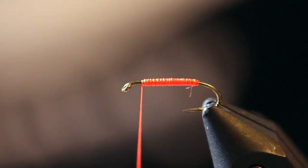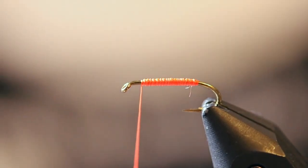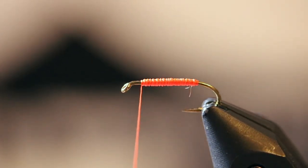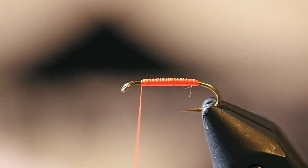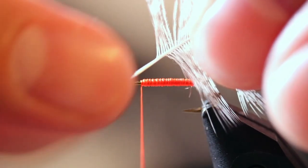From here we're going to be taking a partridge feather. What I've gone ahead and done with this one is removed all the little fuzzies from the bottom of the stem here.